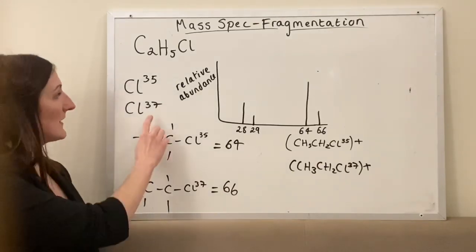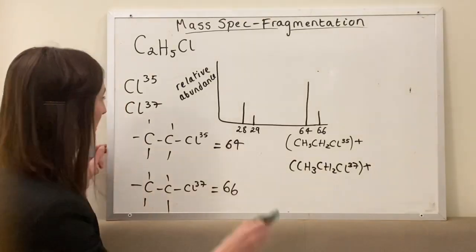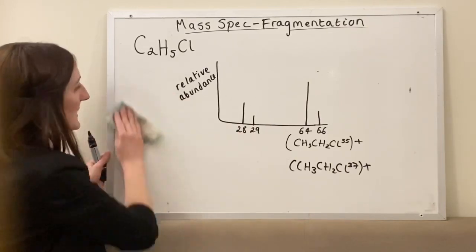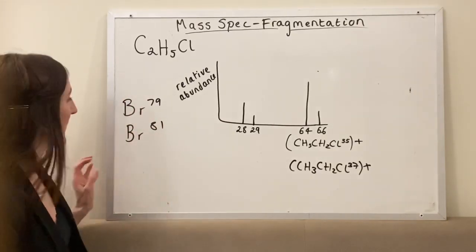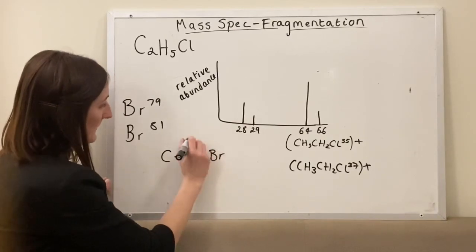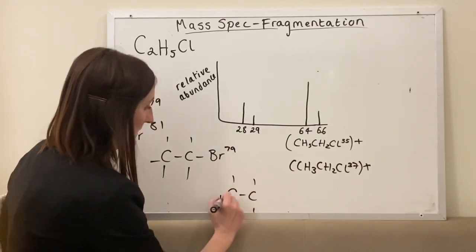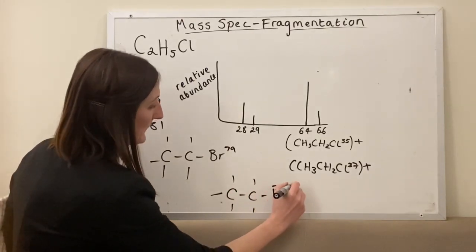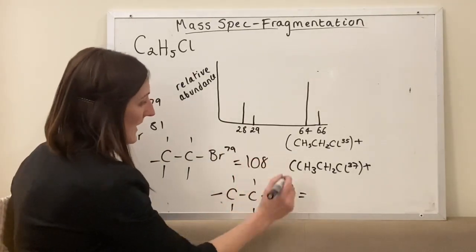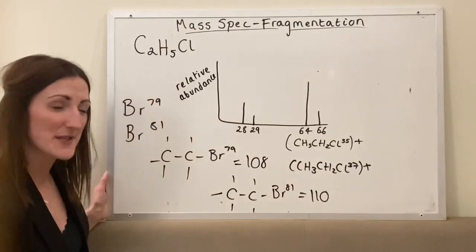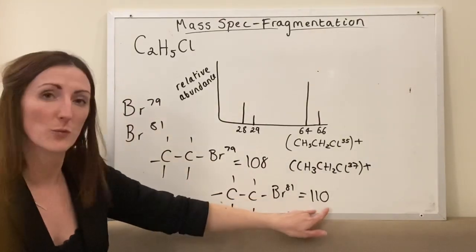I think it's a really good idea to learn the isotopes of chlorine and bromine. The two isotopes of bromine are bromine-79 and bromine-81. So for bromoethane, one molecule could have bromine weighing 79 and the other weighing 81. Adding together all the atoms gives 108 and 110 respectively. So the molecular ion peaks in this spectra would be at 108 and 110.